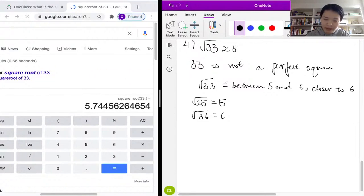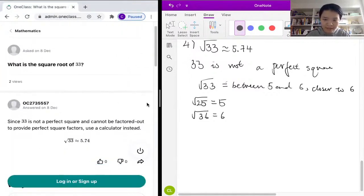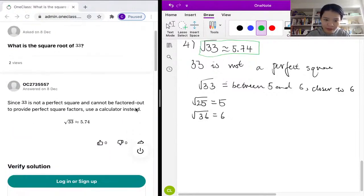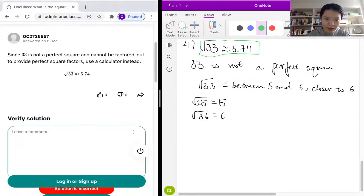The curly equation sign means approximately equal to 5.74. Let's look at our sample solution here. The sample solution says the square root of 33 is 5.74 approximately, and the answer is obtained by using a calculator. Yes, this is correct, so we will say good job, the solution is correct.